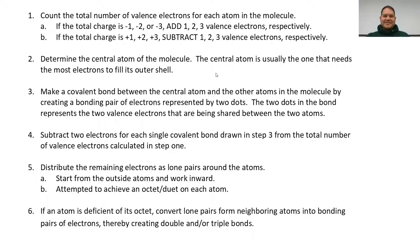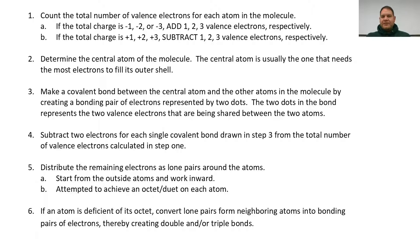Step number one: count the total number of valence electrons for each atom represented in the molecule — just like we did with water. Use the periodic table if you need to. Now, if you have an ion — a molecule with an ionic charge — look at rules 1A and 1B.